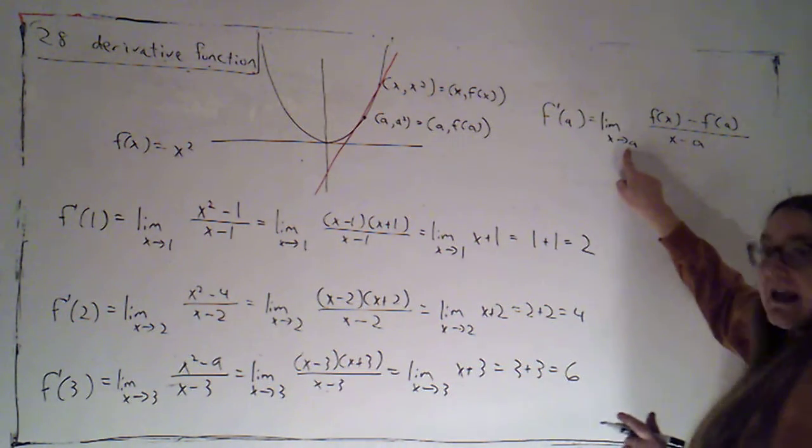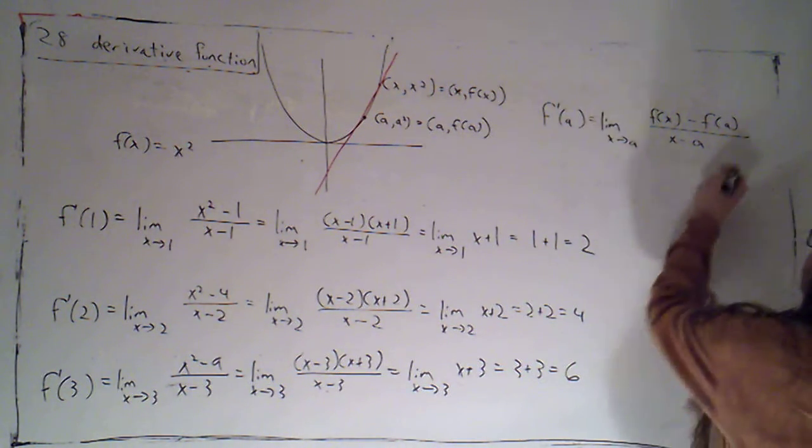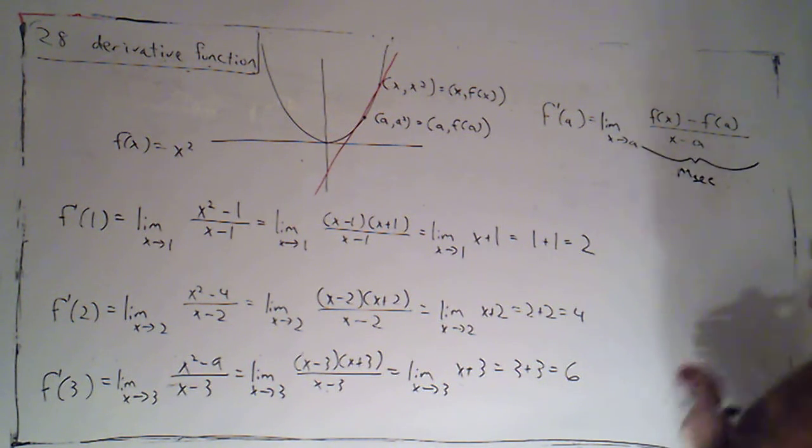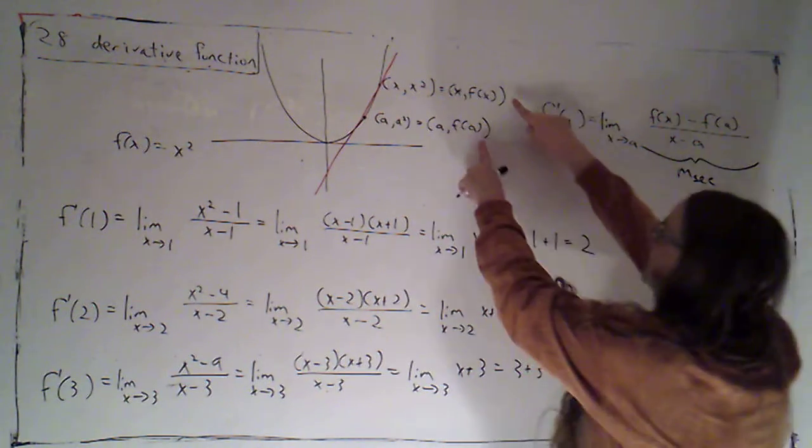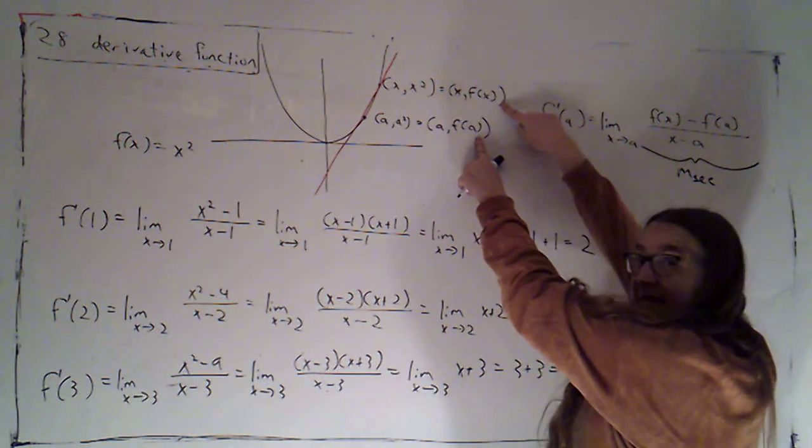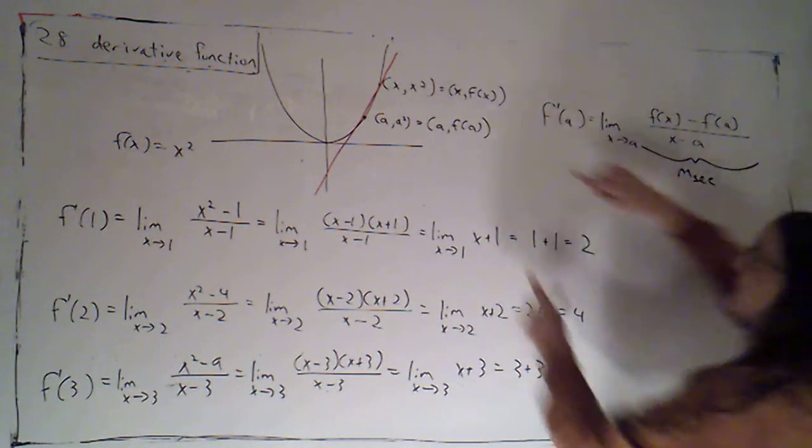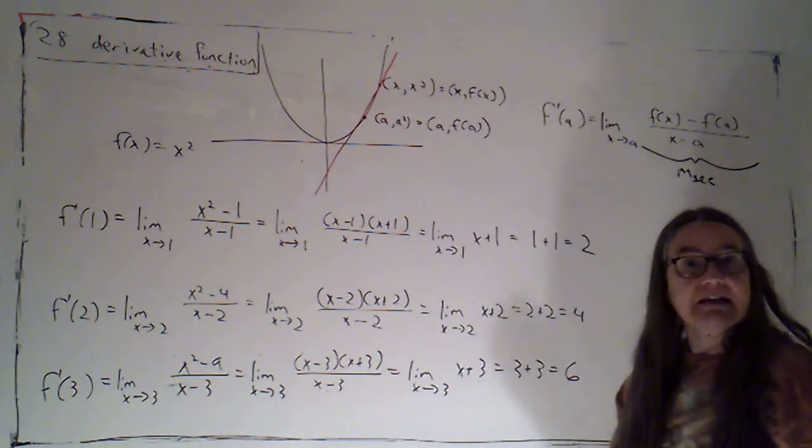And then here's our formula for finding the derivative at that particular point a. It's the limit as x goes to a of this thing, which is just the slope of the secant line. The rise is the difference in y values, so that's f of x minus f of a. The run is the difference in x values, so that's just x minus a.